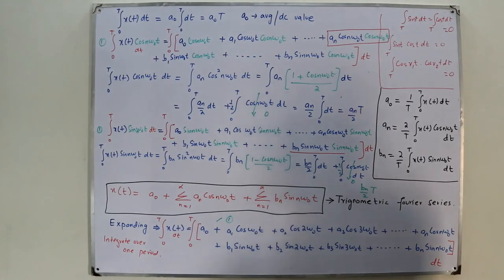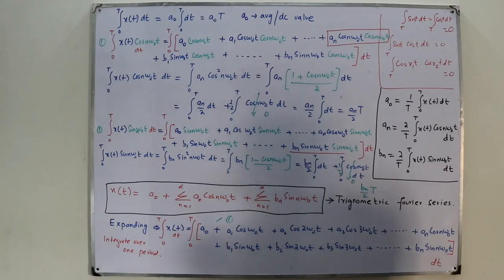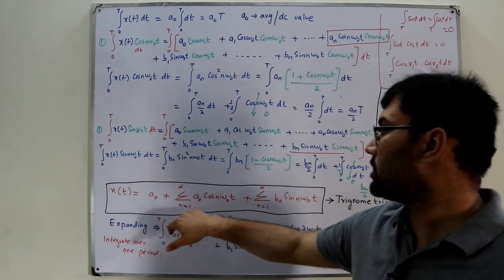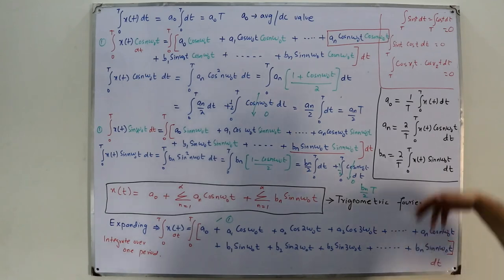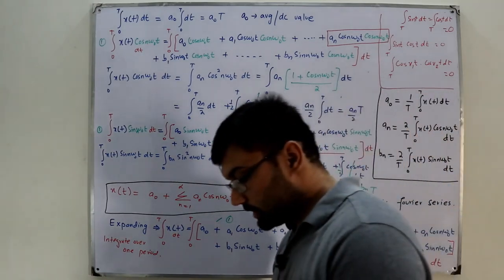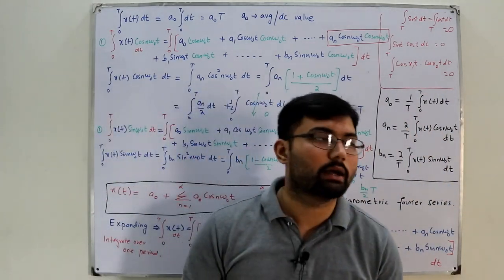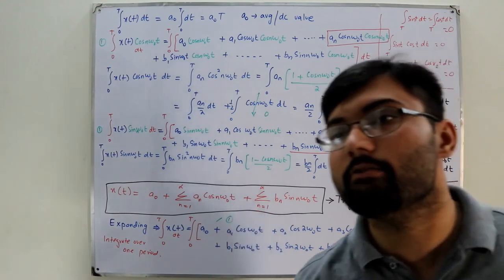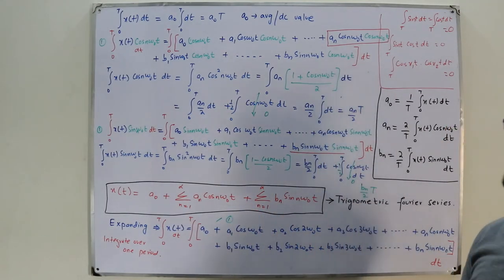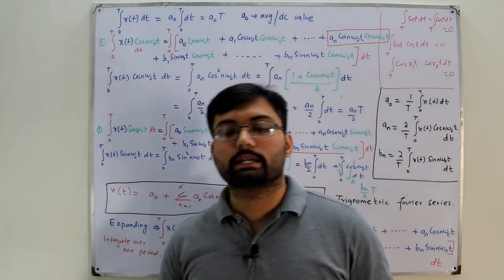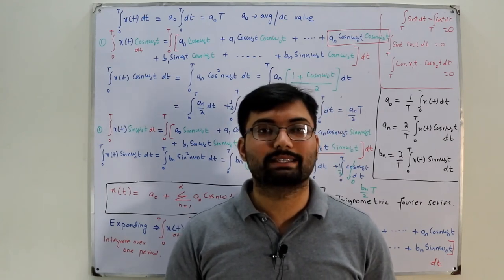In this video, we took the complex exponential Fourier series and derived the trigonometric Fourier series from it. We knew the formula for complex exponential Fourier coefficients, but here we needed formulas for the trigonometric Fourier coefficients a₀, aₙ, and bₙ, which we calculated. This is another detailed view of the trigonometric Fourier series. See you in the next video with the symmetry properties. Take care of yourselves and everyone around you, and do subscribe to the channel.